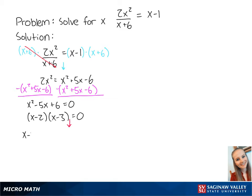Now we have x-2 equals 0 and x-3 equals 0. For the first equation, adding 2 to both sides gives us x equals 2. For the second equation, adding 3 to both sides gives us x equals 3.